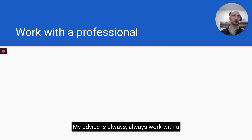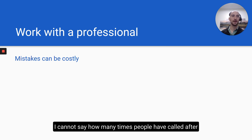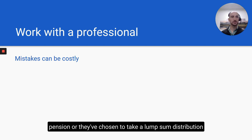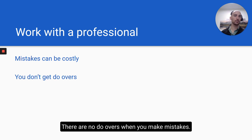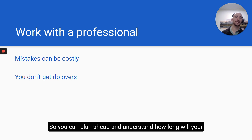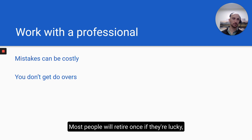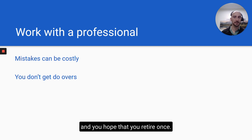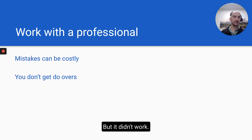My advice is always work with a professional and do it in advance of retirement because mistakes can be very costly. I cannot say how many times people have called after they've had to take a lump sum distribution from their pension, made a mistake, paid 30 or 40% in taxes, and now their total asset value is close to half what it was when they were employed — and you just can't go back. There are no do-overs. You need to know what you're going to spend and what you need to draw to close the gap before retirement, so you can understand how long your assets will last and make an informed decision on when to retire. Most people will retire once if they're lucky.